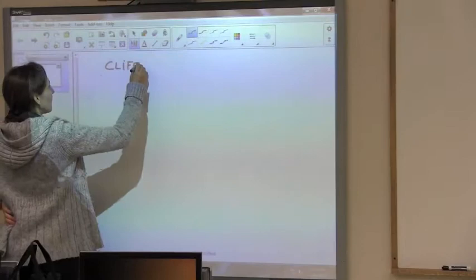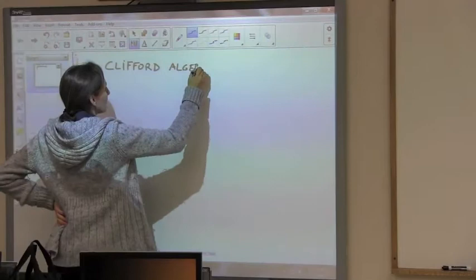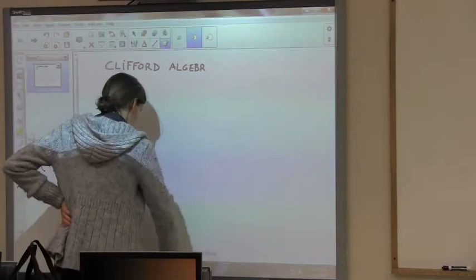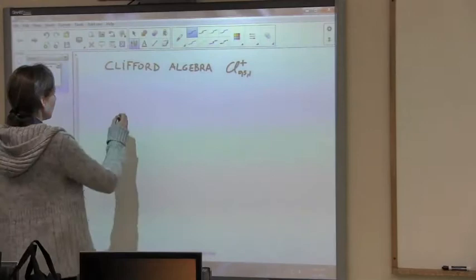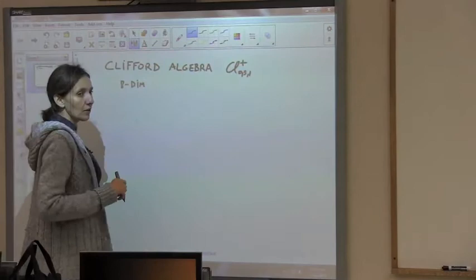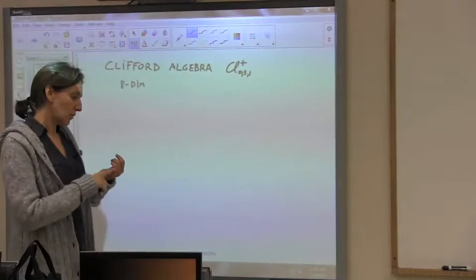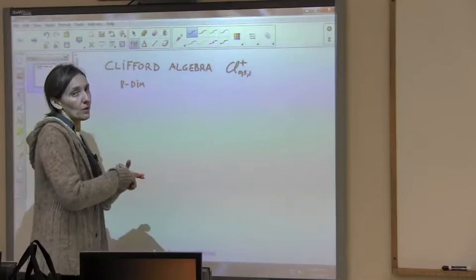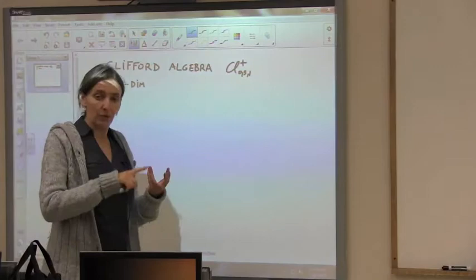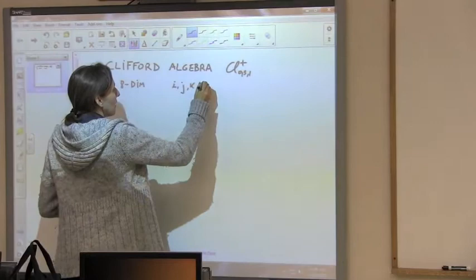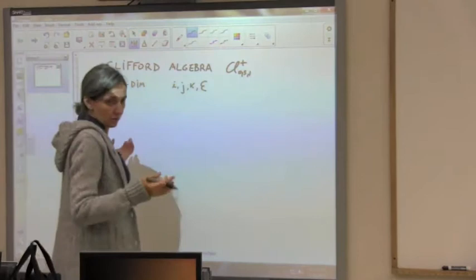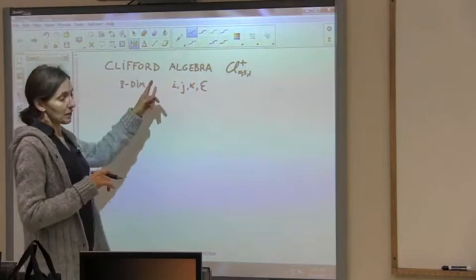Remember, we were going to use this Clifford Algebra to do all our calculations. We took the even subalgebra, so it's eight-dimensional, and we had the unit one, E1-2, E1-3, E2-3, E1-2-3-4, E4-1, E4-2, E4-3 — those were all our basis elements. We used just these four units, which were just renaming the units, and with them we were able to give names to all eight bases.